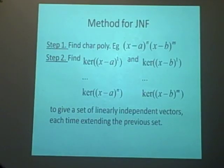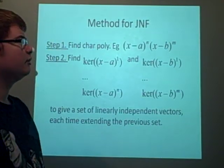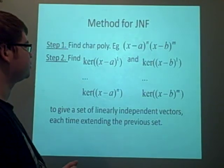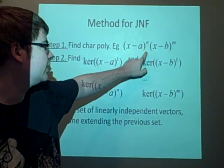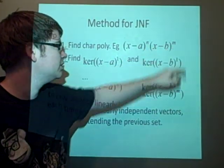Now we're going to the tricky part, which is the method for the Jordan Normal form. First, what you want to do is you want to find the characteristic polynomial, which could be something like (x-a)^n times (x-b)^m.